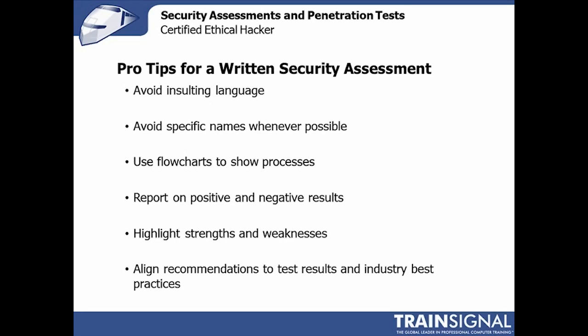There are a few things you want to avoid when presenting a written security assessment. You want to avoid insulting people. It's really easy to step into the realm of 'Joe should have had the firewall locked down' or 'the firewall team failed to secure their firewall.' Depending on how you word it, that can be a slam, especially if the firewall team is going to read the report. Unhappy people are not going to remediate the vulnerabilities you found. Avoid specific names — don't say Joe, don't even say 'firewall team.' Keep it about the firewall or the vulnerability.